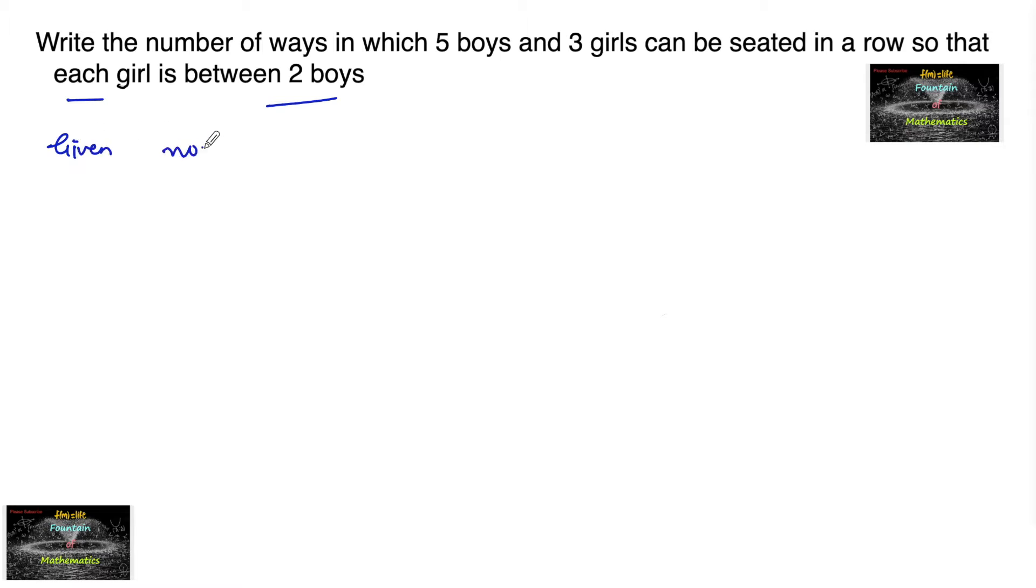So given the problem, the number of boys is 5 and the number of girls is 3. These 5 boys and 3 girls are to be arranged in a row so that each girl is between 2 boys.